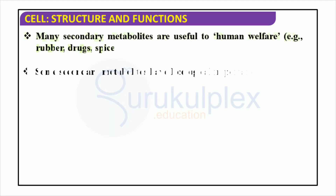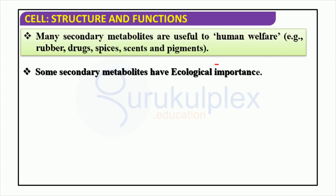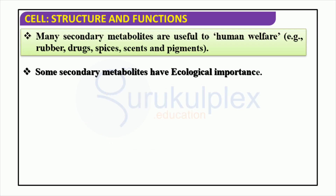Secondary metabolites are highly beneficial and of immense significance for human welfare. They include rubber, drugs, spices, scents, pigments, and aid plants in defending against microbial or insect attack. Understanding the importance of secondary metabolites and acknowledging their effects on our lives is essential.